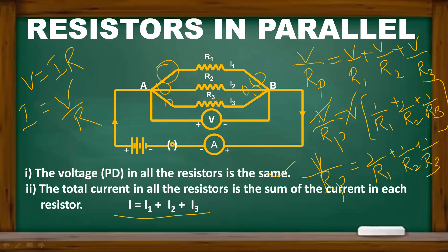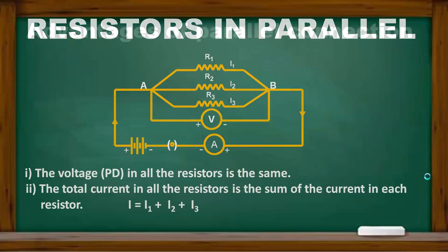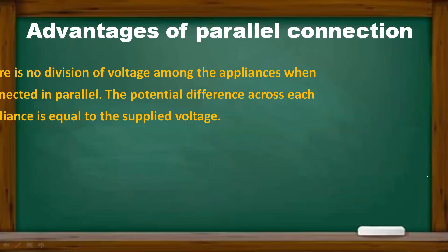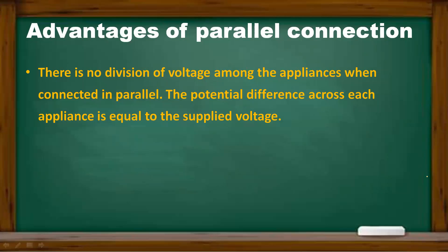In a domestic circuit, we have a parallel circuit connection method. There is no division of voltage among the appliances. Each appliance operates at the same supply voltage — for example, 230V. The current value for each appliance is different, but the potential is common at 230 volts. A three-pin plug rated at 5A, 230V is used.